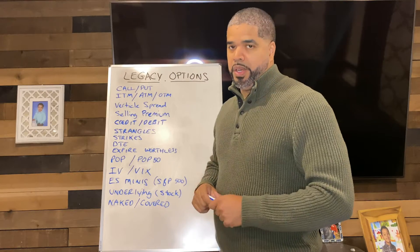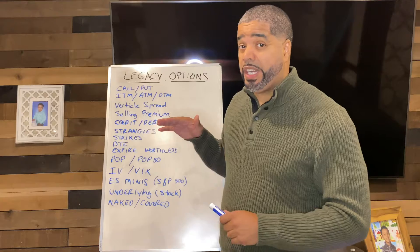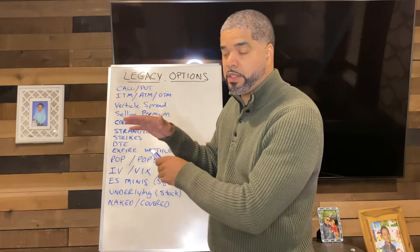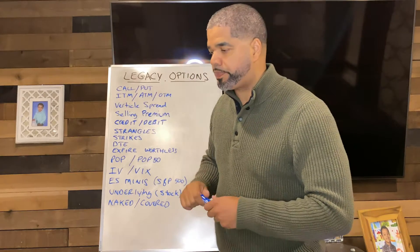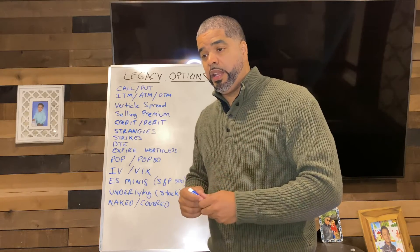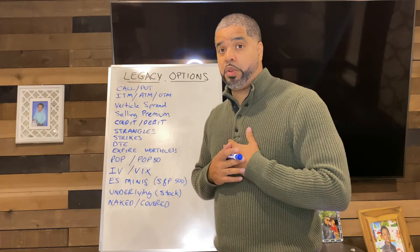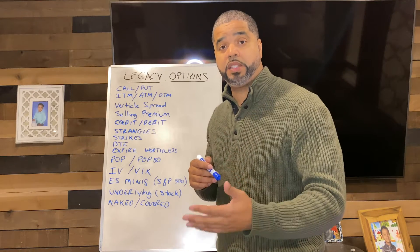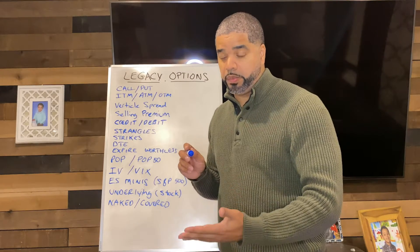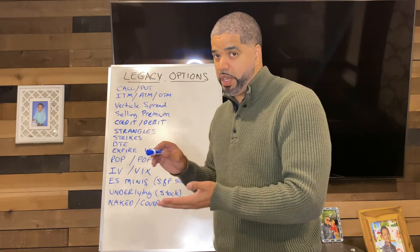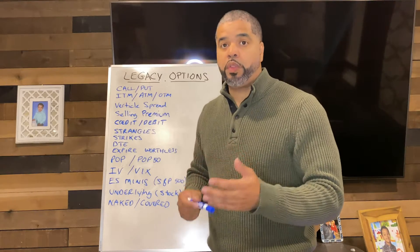OTM — out of the money. That's where my strategy focuses: out of the money puts and calls, mainly puts. So if a stock is trading at $100 and I sell something at 80, that's considered out of the money. The further out of the money you sell a put, the less risky the trade is. You want to be as far out of the money as possible. However, the further out you are, the less premium you'll receive — so the closer to the money you get, the more premium you collect. That's the balance you have to figure out.